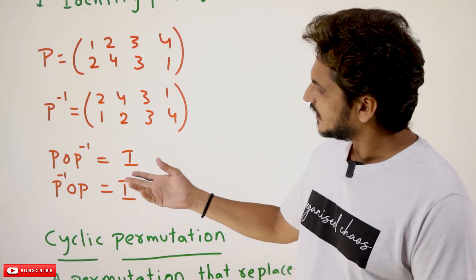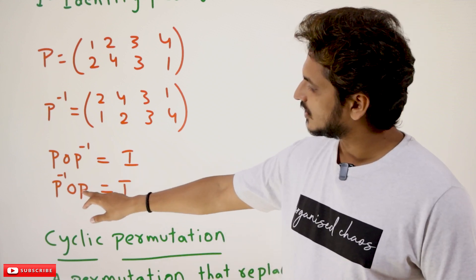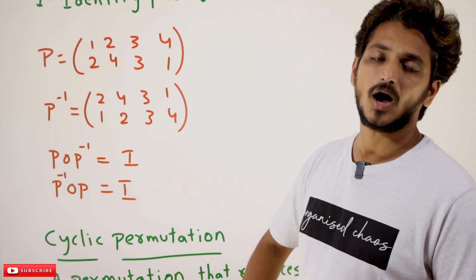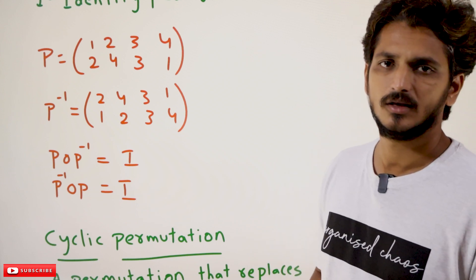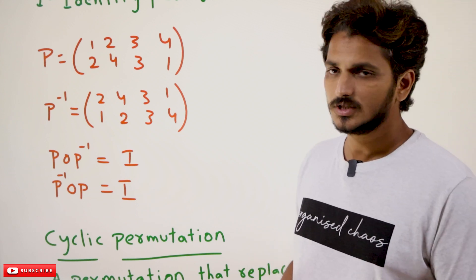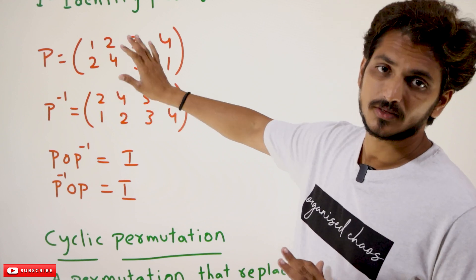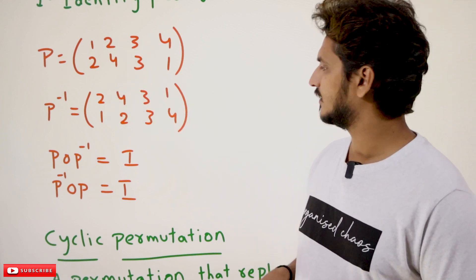Similarly, you can check that P-inverse composition P also equals the identity permutation. This is what we call the inverse of a permutation.